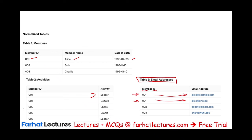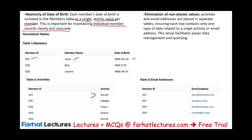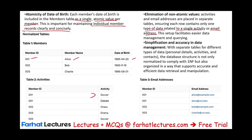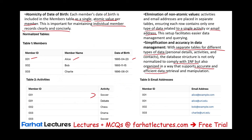Each member's date of birth is included in the members table as a single atomic value per member — this is important for maintaining individual member records clearly and concisely. We don't need to break the date of birth out. Activities and email addresses are placed in separate tables, ensuring each row contains only one type of data related to a single activity or email address. This setup facilitates data management and queries. The database structure is now normalized to comply with 1NF, organized to support accurate and efficient data retrieval. We took this original unnormalized table and turned it into 1NF. This is important because we're going to build 2NF on top of it — we need a clean 1NF compliance before we go to 2NF.